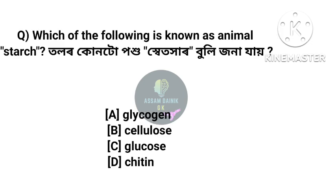Which one of the following is known as animal starch? Tolor kuntu pohoor setohar buli jona jai. The answer is option A: Glycogen. Glycogen is known as animal starch.